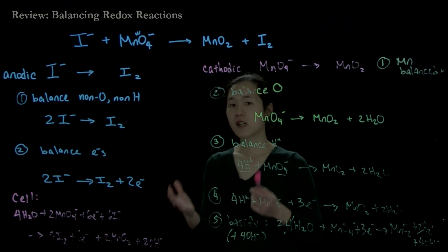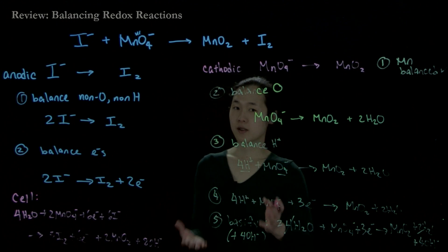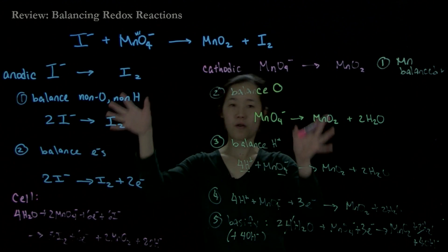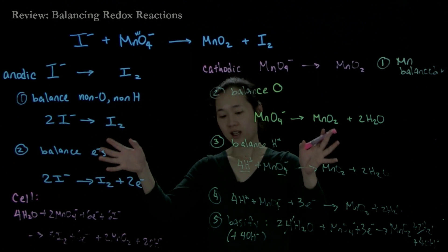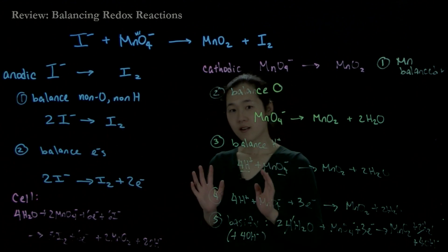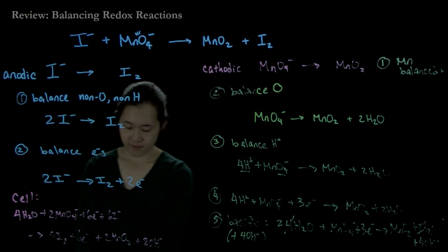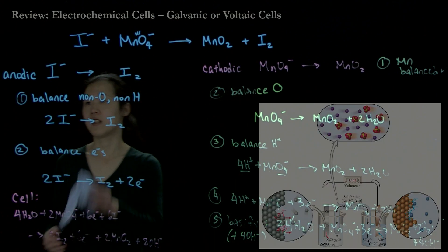We could then figure out how to construct an electrochemical cell by having beakers with both of these reactions side by side. So let's talk about electrochemical cells.